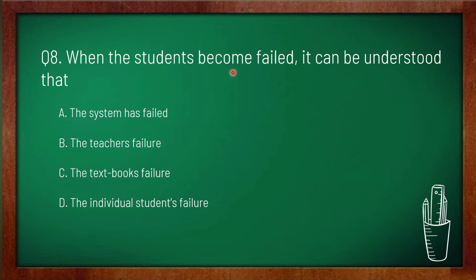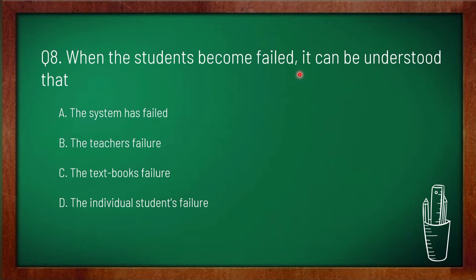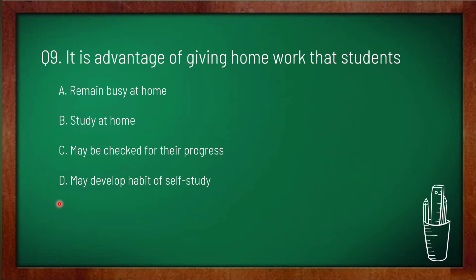Question 8: when a student fails, it can be understood as — option A: the system has failed, option B: the teacher's failure, option C: the textbook's failure, option D: the individual student's failure. When a student fails, it can be understood as the individual student's failure, so option D is correct.